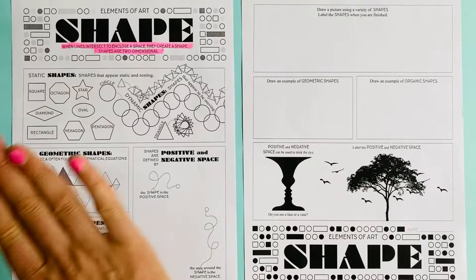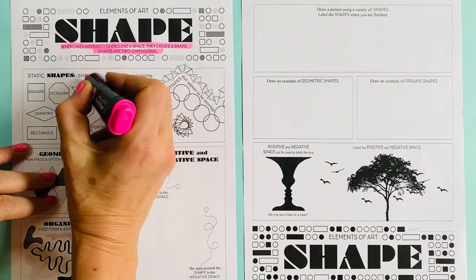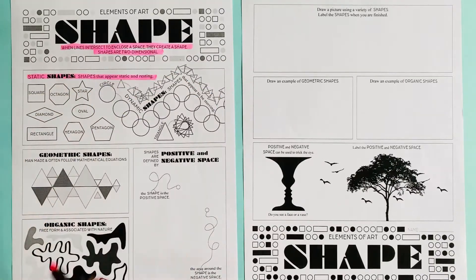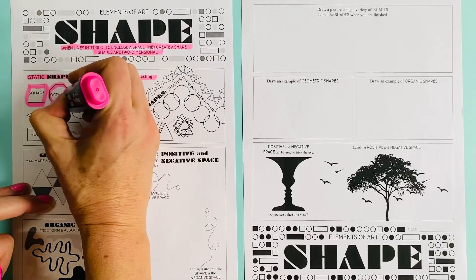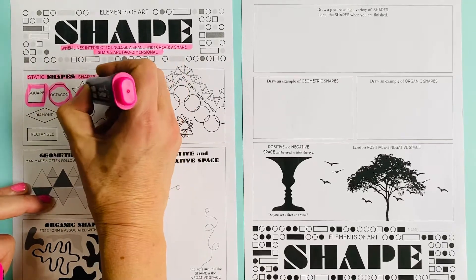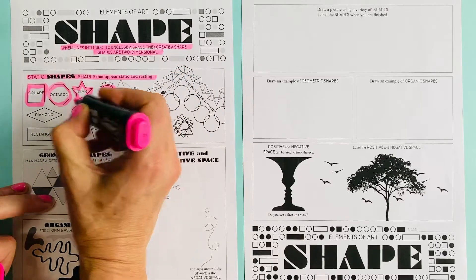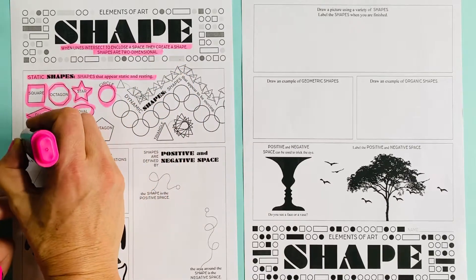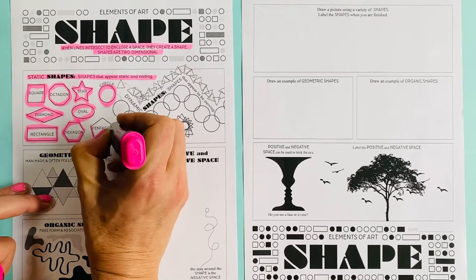Shapes are two-dimensional, meaning a shape is a flat thing. Static shapes are shapes that appear to be resting. We've got a square, an octagon with eight sides, a star, a circle, an oval, a diamond, a rectangle, a hexagon, and a pentagon.